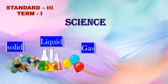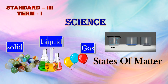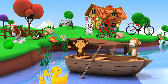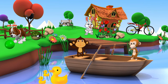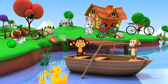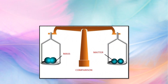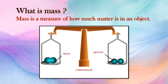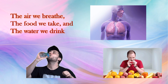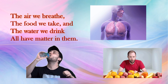Hello friends, today we are going to learn about states of matter. You can see a number of things around you. Everything you can see and touch is made up of matter. Anything that occupies space and has mass is called matter. Mass is a measure of how much matter is in an object. The air we breathe, the food we take, and the water we drink all have matter in them.